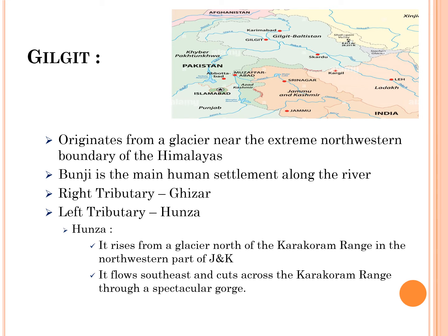Gilgit is an important right bank tributary of the Indus river in its course through the Ladakh region of Jammu and Kashmir. This river originated from a glacier near the extreme north-western boundary of the Himalayas. Bunji is the main human settlement along this river. The right tributary of Gilgit is Gizar, and the left tributary is Hunza. Hunza rises from a glacier north of the Karakoram range in the north-western part of Jammu and Kashmir, and flows southeast, cutting across the Karakoram range through a spectacular gorge.